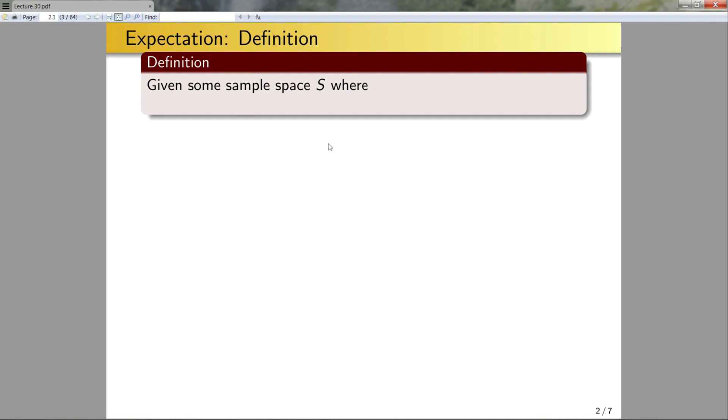Given some sample space S where we can define some PDF Pr over S, a discrete random variable is a function from S to R. So what really is a discrete random variable? Well, let's give some examples.